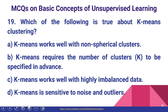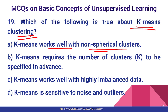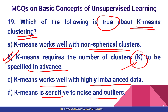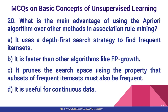Question number nineteen: which of the following is true about k-means clustering? K-means works well with non-spherical clusters; k-means requires the number of clusters k to be specified in advance; k-means works well with highly imbalanced data; or k-means is sensitive to noise and outliers. The correct answer is option B — k-means requires the number of clusters to be specified in advance, because in the first step itself we randomly choose k number of centroids.